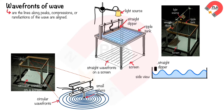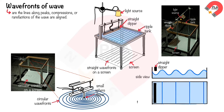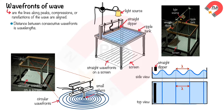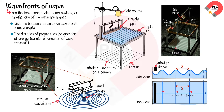The side view and top view of the water wave in the ripple tank show that wavefronts are straight along crests or troughs of the wave. The distance between consecutive wavefronts is one wavelength, because wavelength is the distance between two consecutive crests or troughs. The direction of propagation, or direction of energy transfer, is always perpendicular to the wavefronts.